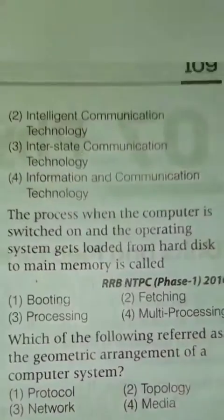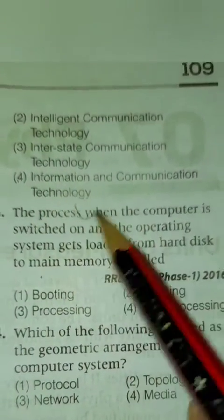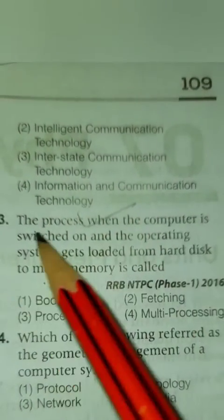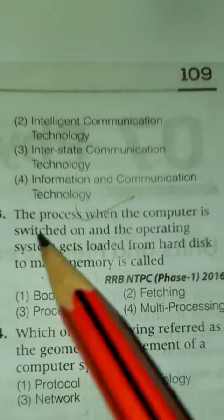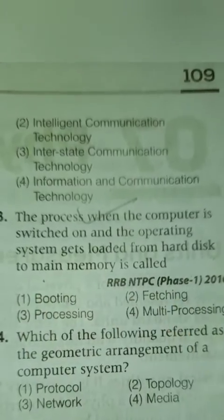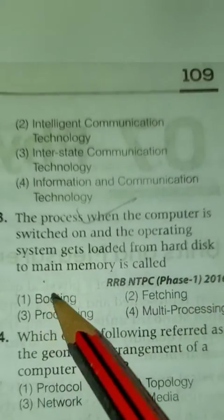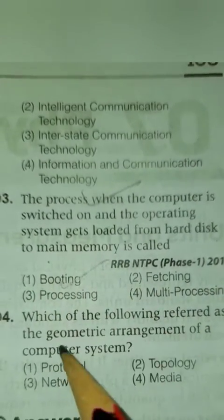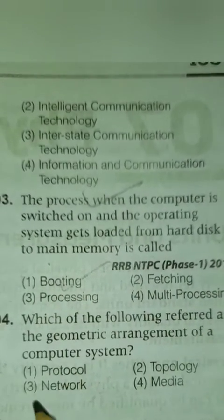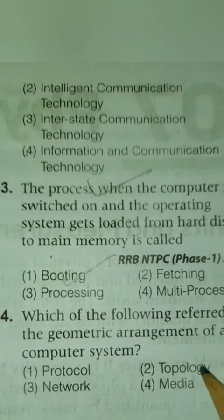The full form of BIOS is Basic Input Output System. ICT is the common abbreviation for Information and Communication Technology. The process when the computer is switched on and the operating system gets loaded from the hard disk to main memory is called booting. Which of the following refers to the geometric arrangement of a computer system? Topology.